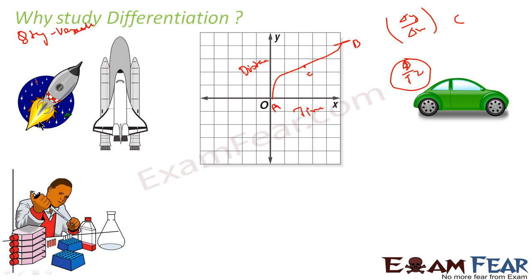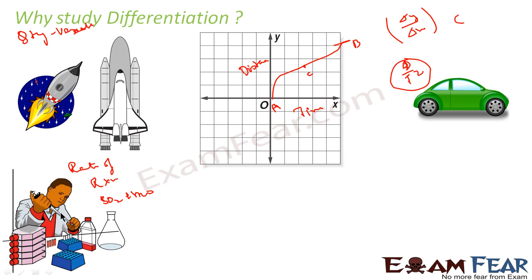If you are planning to go into the field of chemistry, you also need differentiation. Here, you have to find the rate of change of a reaction. For example, you have sulfur, you add water, you get H₂SO₄ and similar reactions. There, you want to find the rate of change of reactions, and that is done using differentiation.